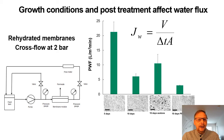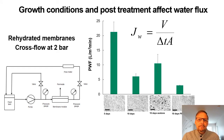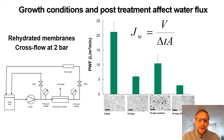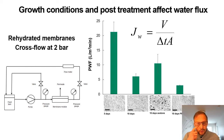These membranes based on bacterial cellulose can be used for filtration — demonstrated here as cross-flow filtration at a given pressure. On the right you can see the pure water flow (PWF): the volume per unit area per unit time flowing through the membrane at a given pressure. Depending on membrane morphology and permeability, different values are obtained, demonstrating our ability to control permeability, which is very important in filtration.